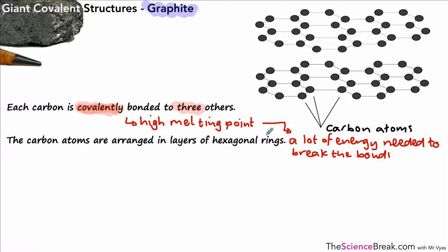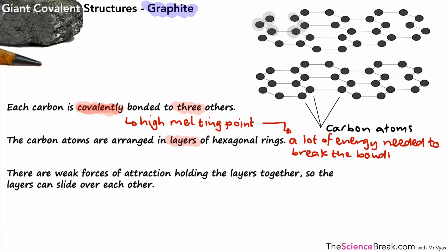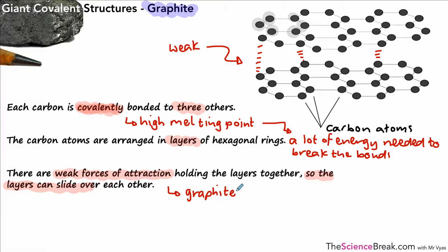The carbon atoms are arranged in layers of hexagonal rings. If you look at one of those hexagons, you can see six carbon atoms arranged in a hexagon. The carbons are arranged in layers, and between the layers there are weak forces of attraction holding those layers together. Those weak forces are nowhere near as strong as the covalent bonds, so the layers can slide.